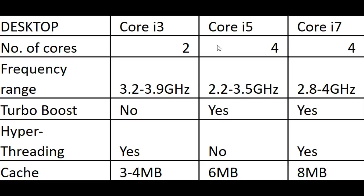Starting with the most important thing: the number of cores. The more cores you have, basically the more processing power and the faster your computer is going to be. The cheapest chip, the Core i3, only has two cores, compared to the i5 and the i7 which each have four.